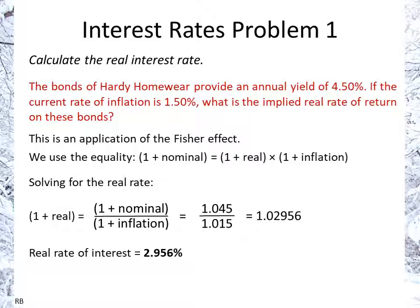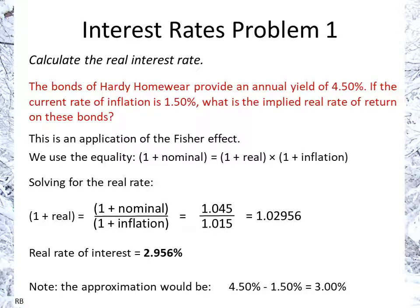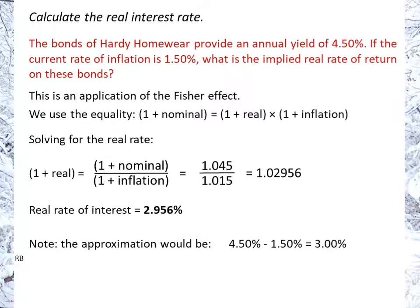Now compare that to the approximation. The approximation would be the nominal rate minus the inflation rate to give the real rate. And you can see it's pretty close — we have 3% versus 2.956%.